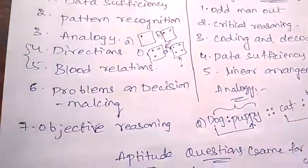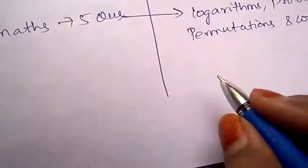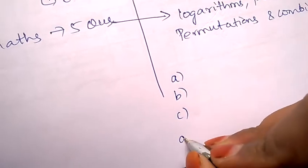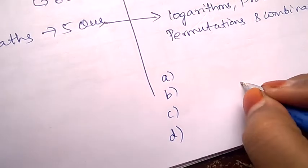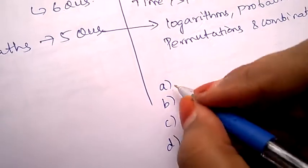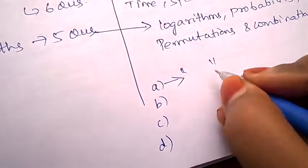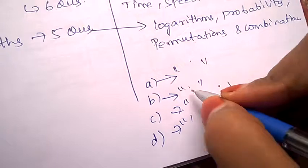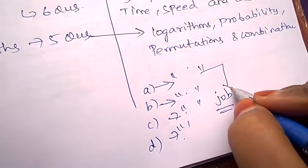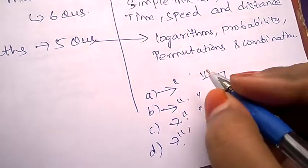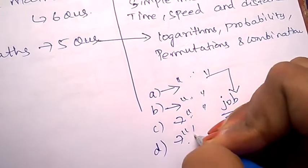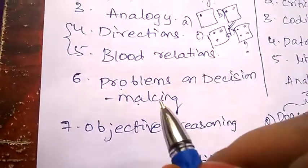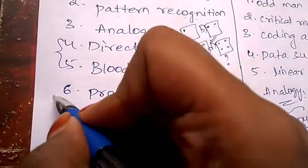Problems on decision making will also be asked. For example, there are four persons who have applied for a job role. The qualifications of A, B, C, and D are given. Out of these four persons, who will be the best person who suits for this job role? You need to take a decision depending upon the criteria which they mention. These are the questions which will be asked under decision making. This is very important.